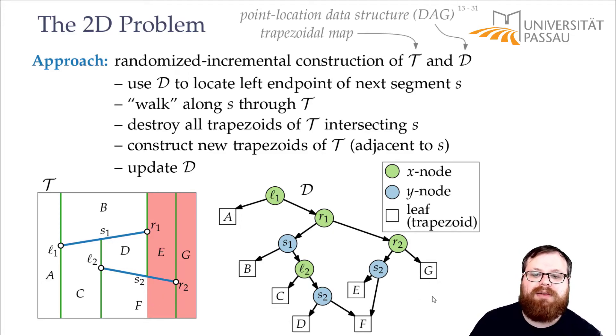And now you see why it's not a tree anymore. Because now we have two nodes, two interior nodes, that are both S2, and both point to the same trapezoid F. So there are two ways to arrive here. But it's still directed, everything is directed away from the root, and it's acyclic, you cannot go back anymore. So this is a DAG.